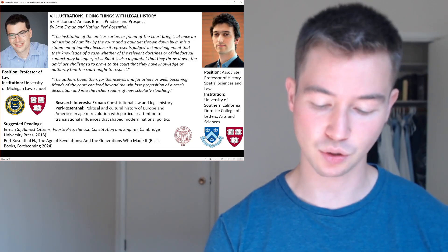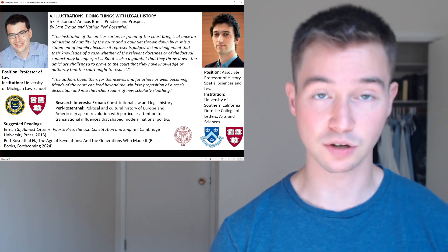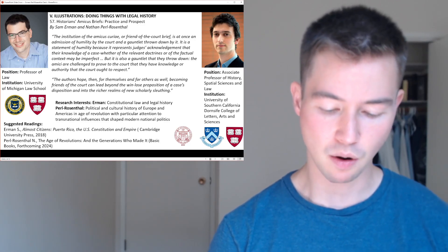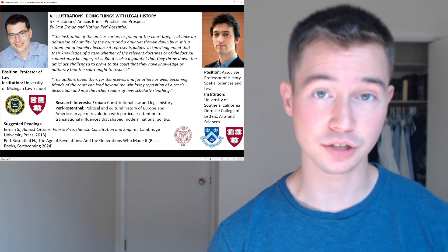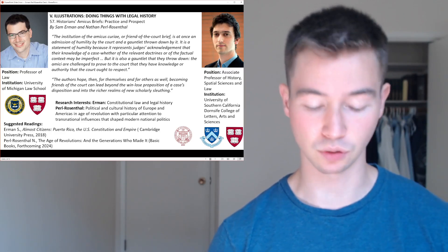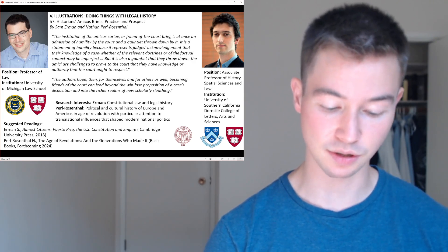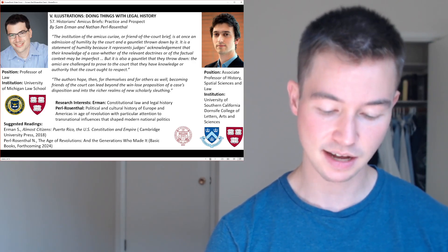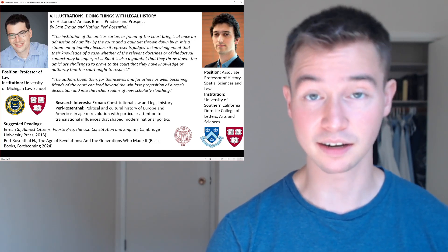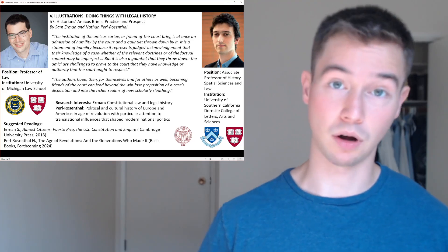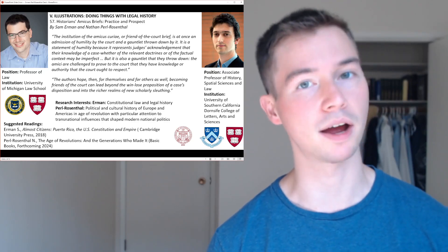Yet there are two troublesome questions about expertise that threaten this cross-disciplinary collaboration. One is the nature of historians' expertise — about which things exactly are historians expert, particularly relative to lawyers. The second is that courts' work and expertise also concern relating the past to the present, especially where precedent is concerned. So where does the expertise of the historian end and the court begin?